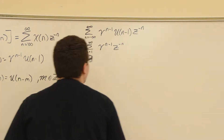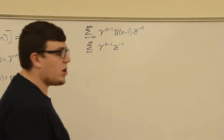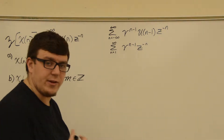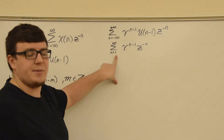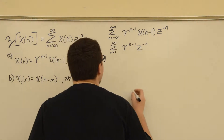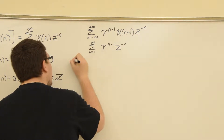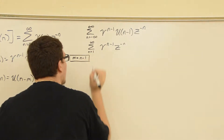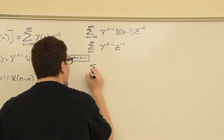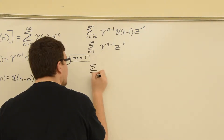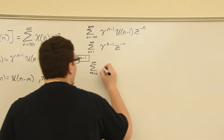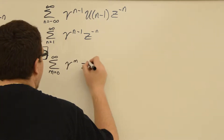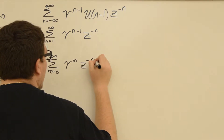This looks like it could be a geometric series, but in order to apply our sum of an infinite geometric series formula, this index has to be 0. So we're going to change the index. We say that m equals n minus 1, and we get the sum from m equals 0 to infinity of gamma to the m, times Z to the negative m plus 1.